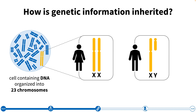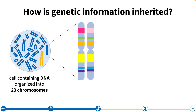We have two copies of each chromosome because one is inherited from our mother and the other from our father. If we zoom into one of our pairs of autosomal chromosomes, we can see that each one is made up of genes. We can inherit different versions of a gene from each of our parents. The different versions of genes are what make us unique, but certain changes in certain genes can also lead to disease.